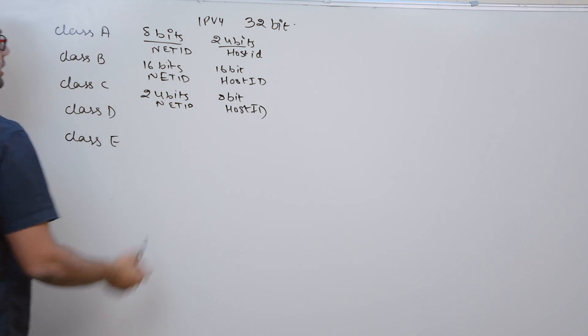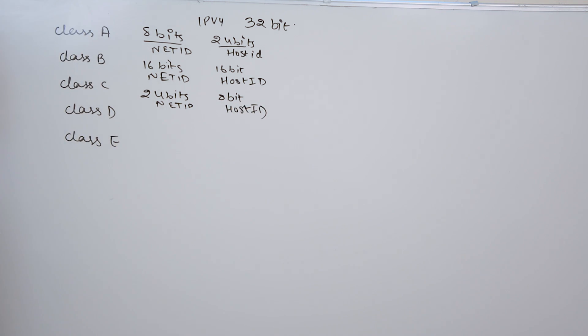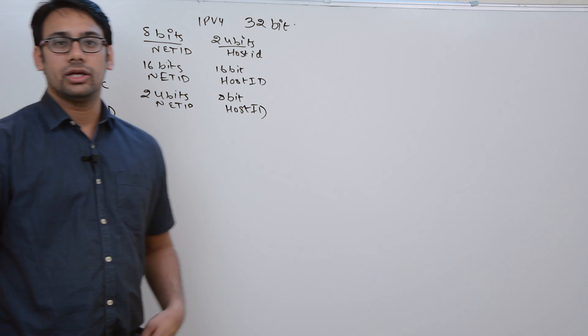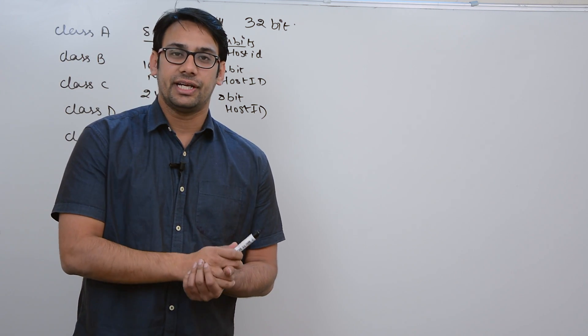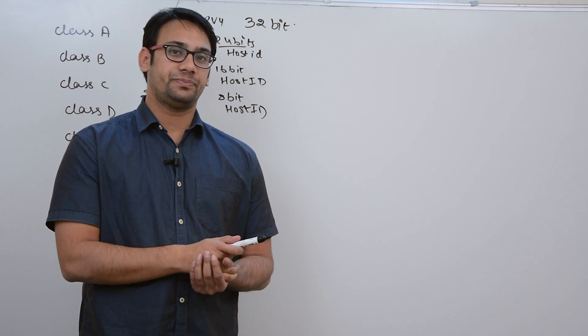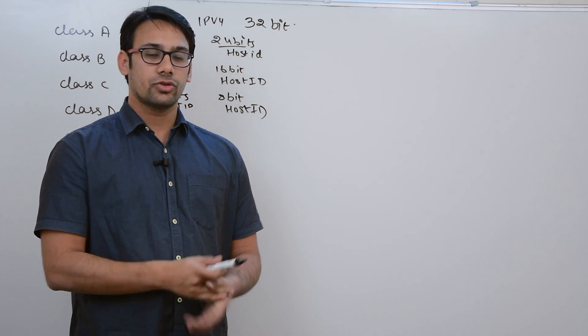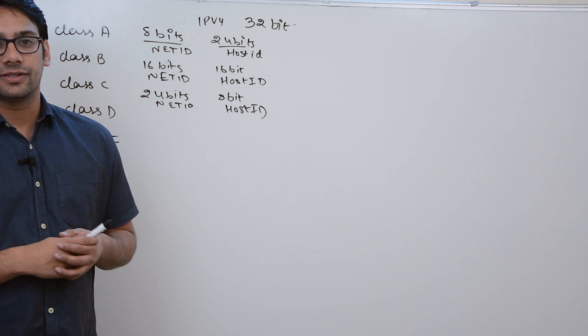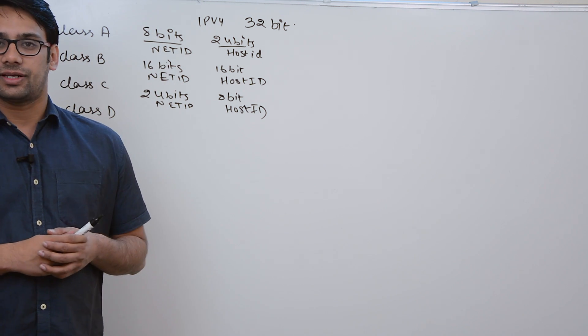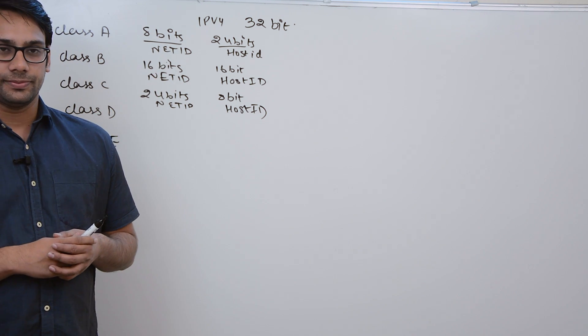In Class D and Class E, there is no separation between the network ID and the host ID. Let us see how Class A, Class B, Class C, Class D, and Class E are implemented.